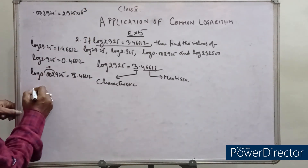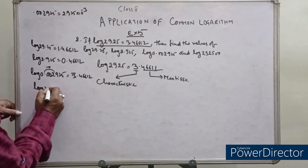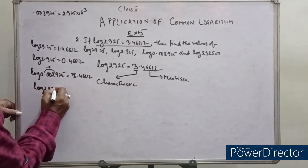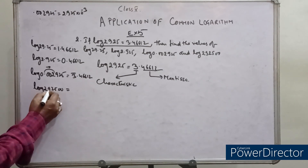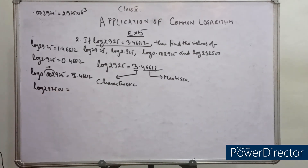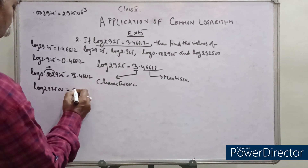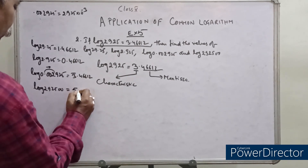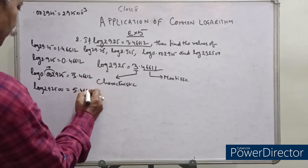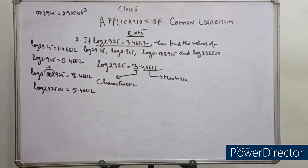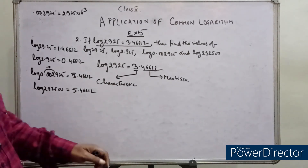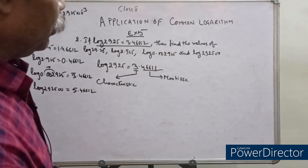For log 29250, there are 6 digits, so the characteristics will be 5. The answer is 5.46612. The characteristics are different across these numbers, but the mantissa remains the same. This is all about finding logarithms.